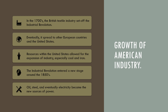The Industrial Revolution is going to enter a new stage around the 1850s. Oil, steel, and eventually electricity are going to become the new sources of power instead of steam, and we'll begin to see these grow and spread across the country.